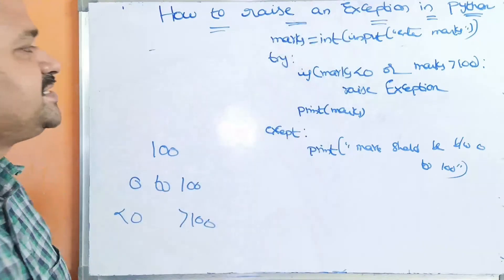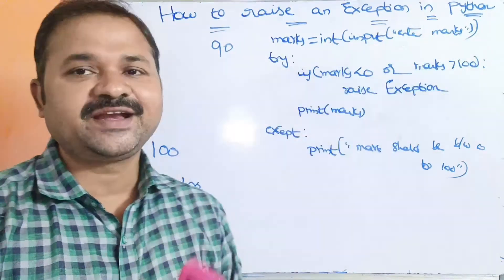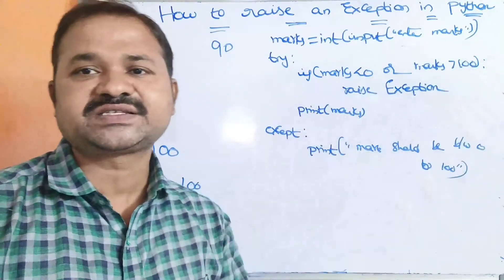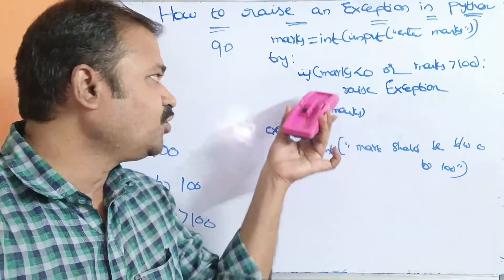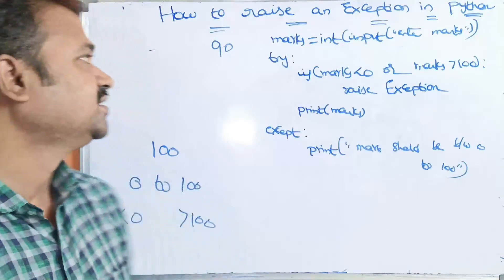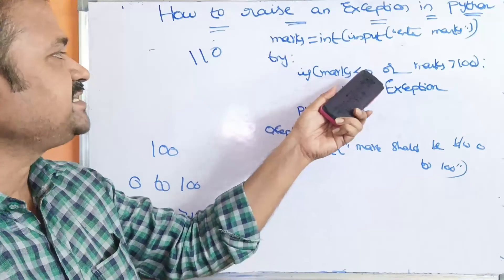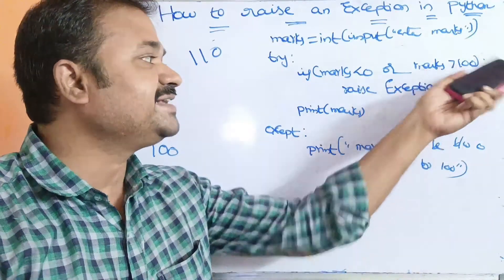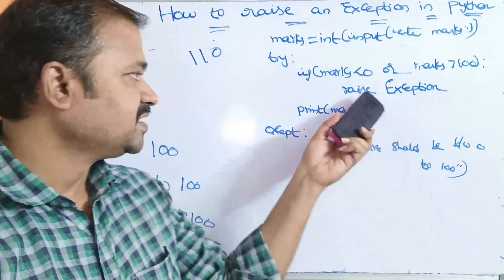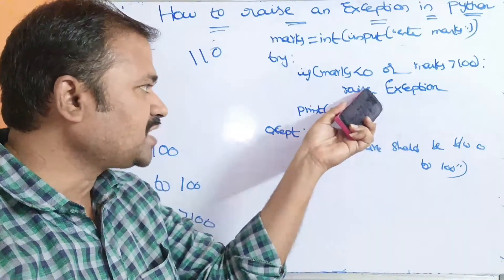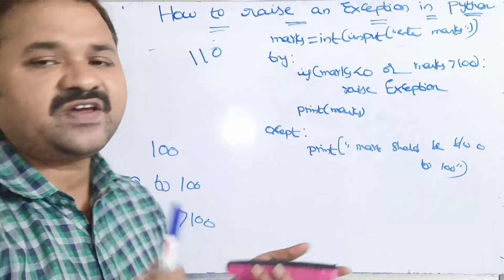Let's trace the execution. If marks = 90: 90 < 0 is False, 90 > 100 is False, so the entire condition is False — control exits the if block and print(marks) executes, printing 90. No exception is raised, so the except block won't execute. Now if marks = 110: 110 < 0 is False, but 110 > 100 is True — the condition is True, raise Exception executes, control goes to the except block, and 'marks should be between 0 to 100' is printed.